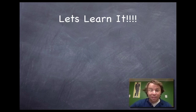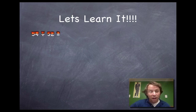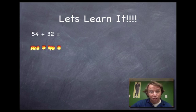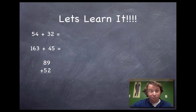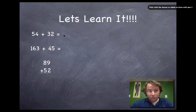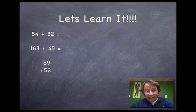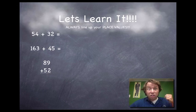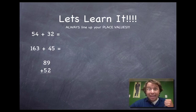All right, we're gonna learn it. I'm gonna introduce a couple of different problems here. So we got 54 plus 32, we're gonna do 163 plus 45, and then our last problem, it's actually gonna be lined up for us, 89 plus 52. So I want to draw your attention to this bottom problem down here. See how it's lined up nice and straight? That's what we have to do with the top ones as well. Now you gotta remember to line up your place value. Say that with me: line up your place value, line up your place value, line up your place value.